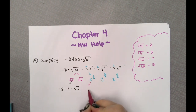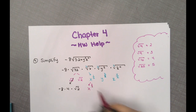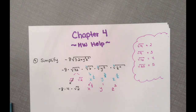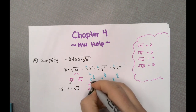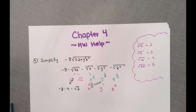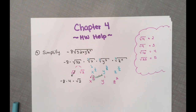y squared under a square root gives an exponent of 2/2, which simplifies to 1 — so it comes outside. z to the fourth under a square root gives 4/2, which simplifies to 2 — so z squared comes outside. If you end up with a fraction like one-half, that stays inside as a radical. If it is not a fraction — like 1 or 2 — those do not belong inside the radical and they go outside.